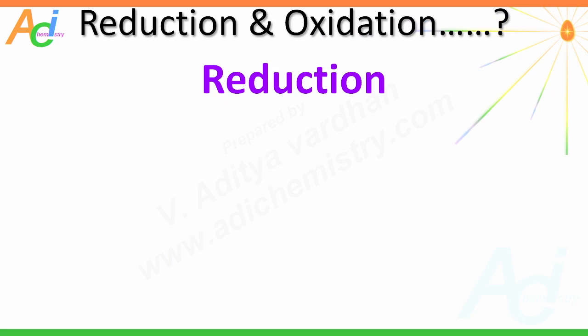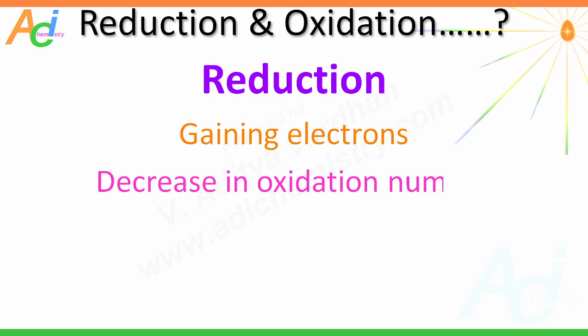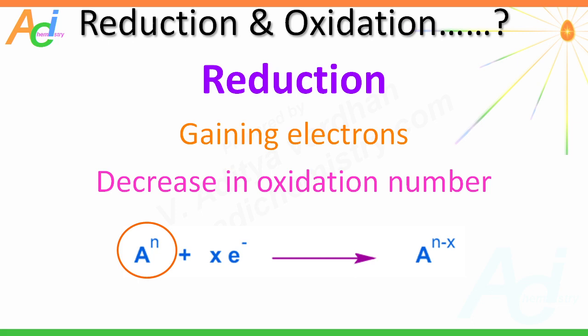Let us see what is reduction. It is a half reaction involving gaining of electrons that results in a decrease in the oxidation number. This is an example of a reduction half reaction. Here, the oxidation number of atom A is decreased from N to N minus X when added with X number of electrons. It actually indicates an increase in the negative charge, or you can say a decrease in the positive value.